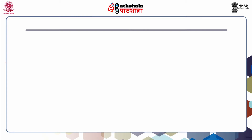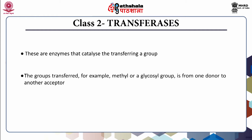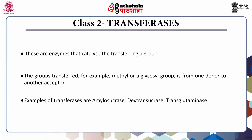Class 2 enzymes are transferases. These enzymes catalyze the transfer of a group — for example, a methyl or glycosyl group — from one donor to another acceptor. Examples of transferases are amylosucrase, dextransucrase, and transglutaminase.